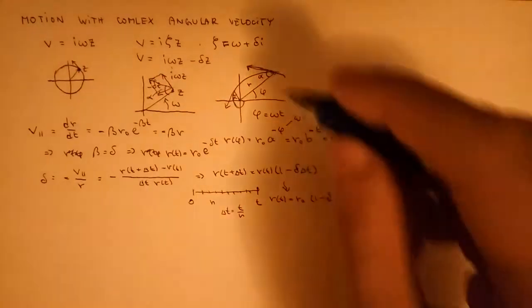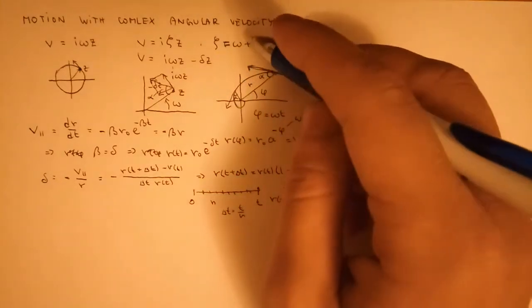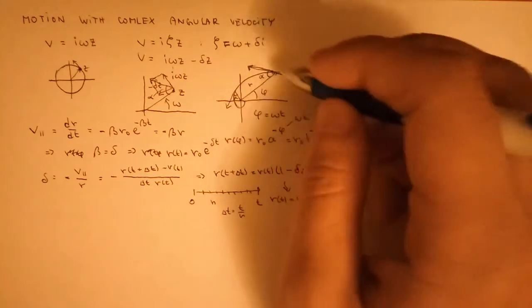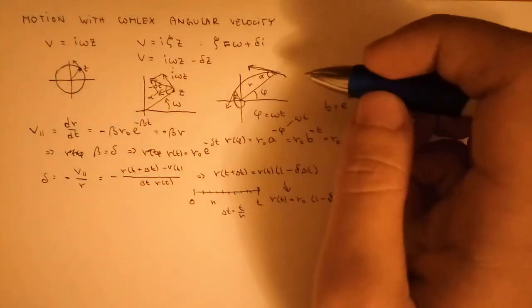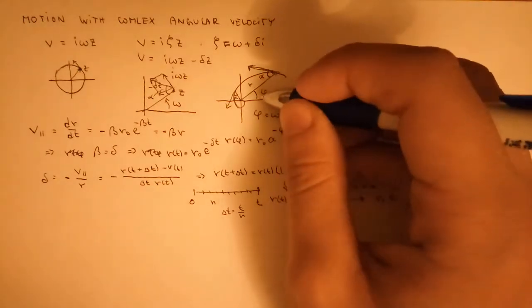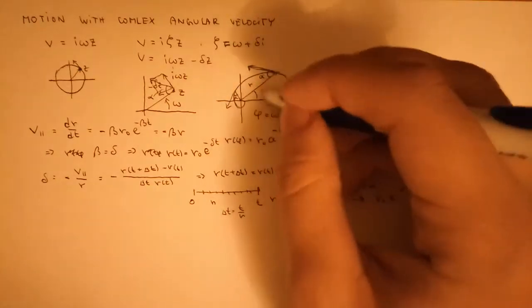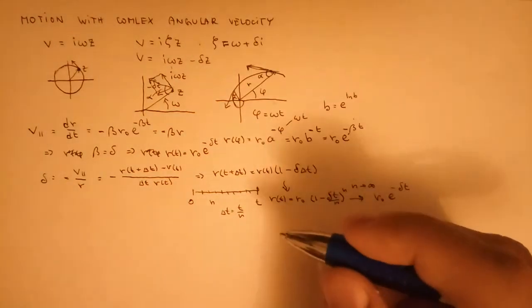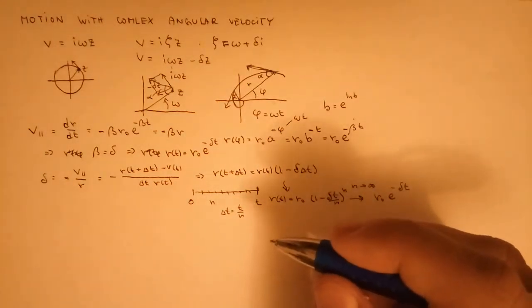So this motion with complex angular velocity is just motion along a logarithmic spiral with constant angular velocity omega and damping constant delta.